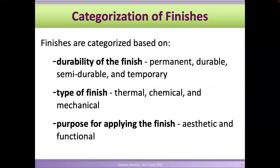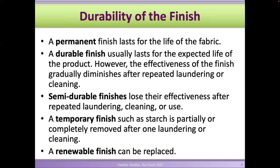There are many ways to categorize finishing. We can look at the durability: some finishes are durable, some are temporary — so we call them permanent, semi-durable, or temporary finishes. We can also categorize by type: thermal (using heat), chemical (using chemicals), or mechanical (using mechanical processes). Finally, we can categorize by purpose: are we changing the aesthetics of the fabric, or enhancing its performance — making it a functional finish.